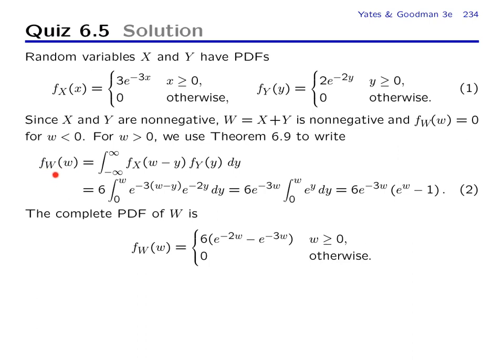And the theorem says the PDF of w is the convolution of the PDF of x and the PDF of y. Now to go farther, we have to use our information we know about each of the PDFs. First, we recall that the PDF of y is 0 for y less than 0, so this function is 0 for y less than 0. And so this makes our starting point be y equals 0.